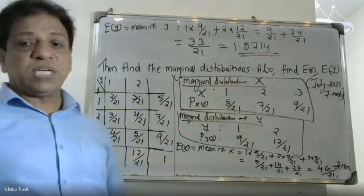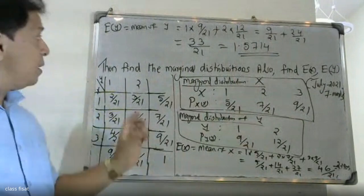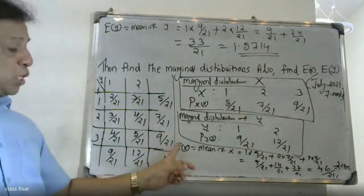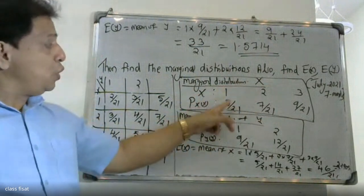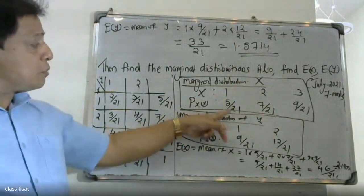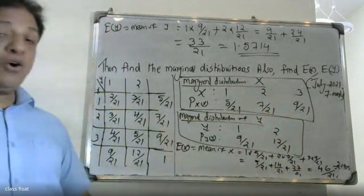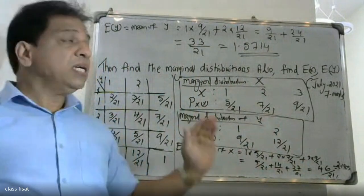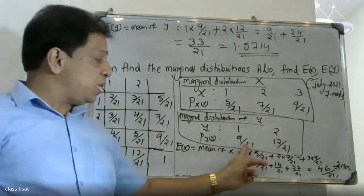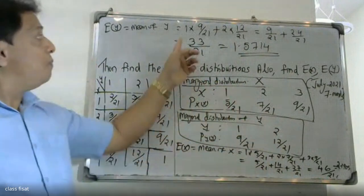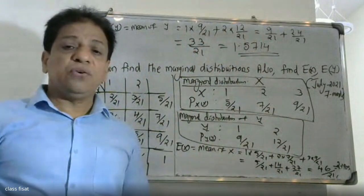This question asks for the expectation of X and the expectation of Y. The mean of X, that is the expectation of X, equals 46/21 ≈ 2.19. The marginal distribution of Y gives P_Y values of 9/21 and 12/21, so E(Y) = 1 × (9/21) + 2 × (12/21) = 33/21 = 1.5714.